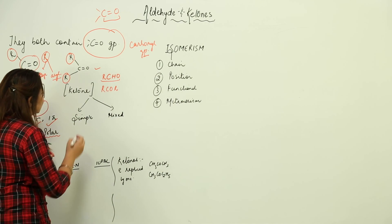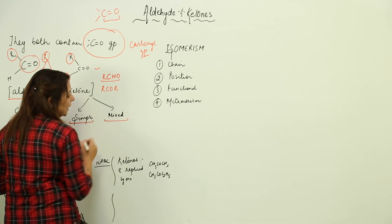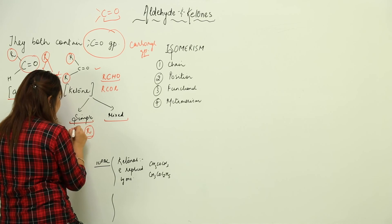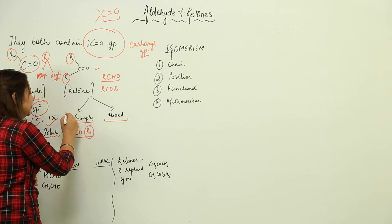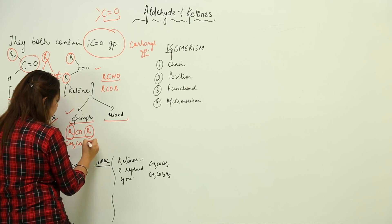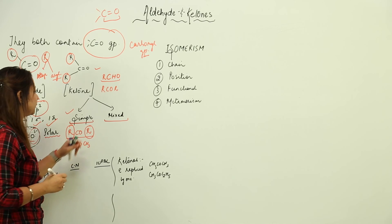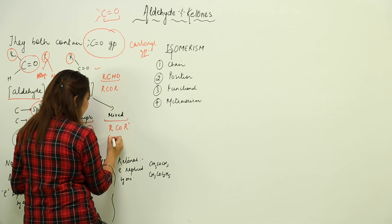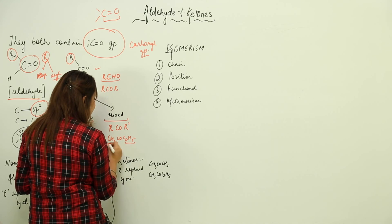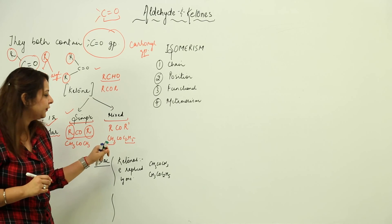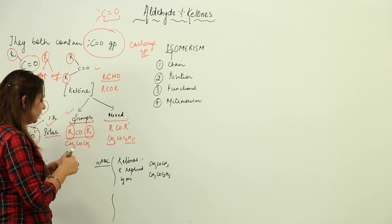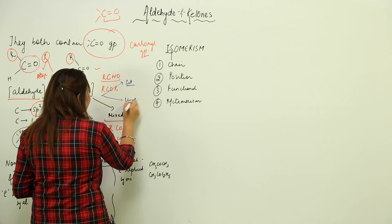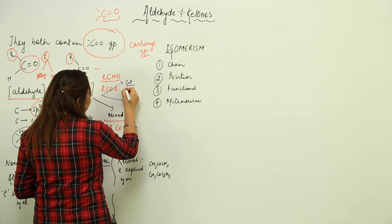Ketones are of two types: simple and mixed. In a simple ketone, the two alkyl groups attached to the carbonyl group are the same — for example, CH3COCH3 is a simple ketone because both R groups are identical. In a mixed ketone, the two R groups are different — for example, CH3COC2H5, where the two R groups differ. Ketones can also be divided into further categories such as saturated and unsaturated.